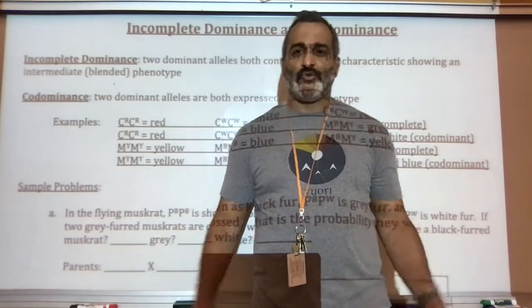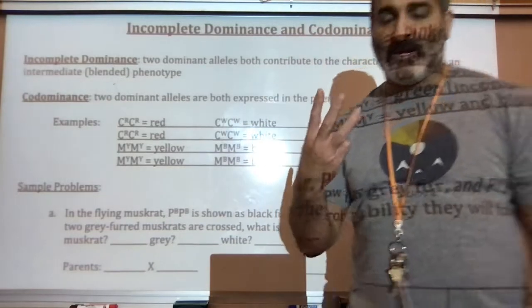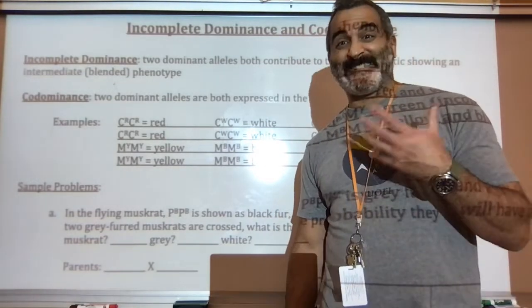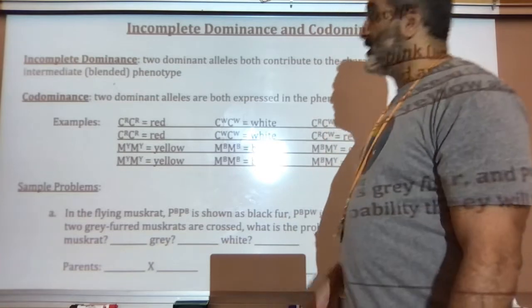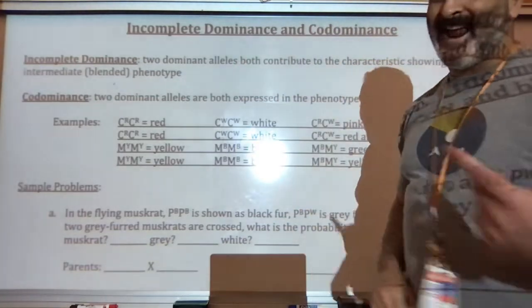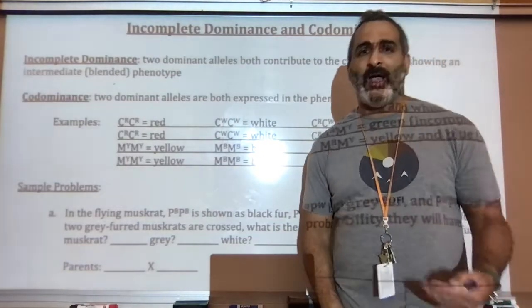Hi there, everybody. Welcome to genetics lecture video number three. This is actually our second type of genetics cross. This genetics cross is called incomplete dominance and or codominance. It depends on the type of problem that you have.